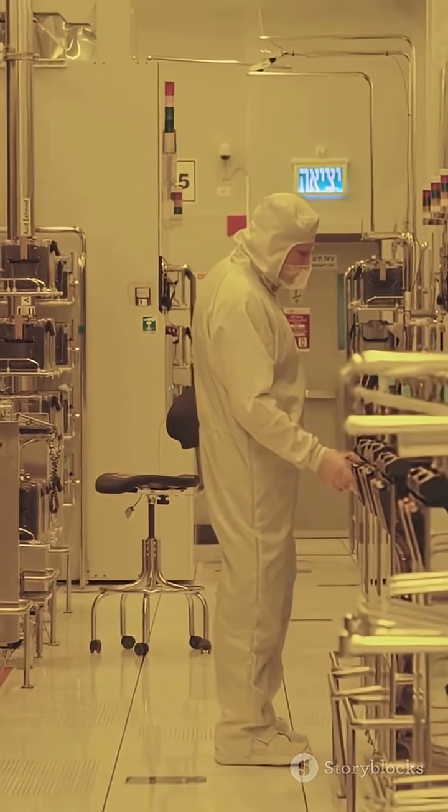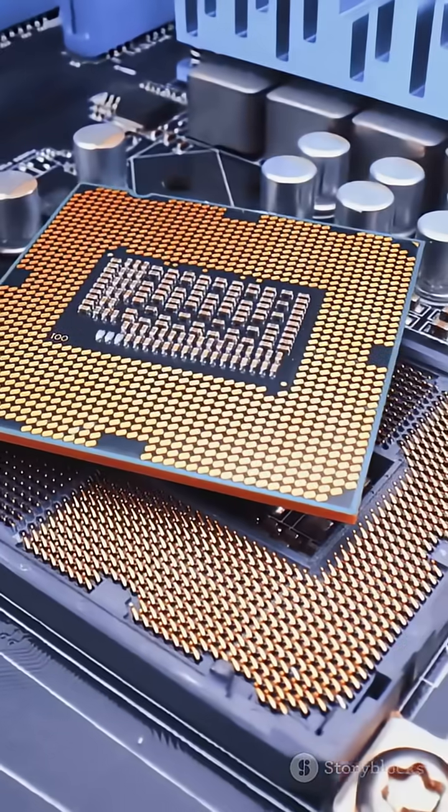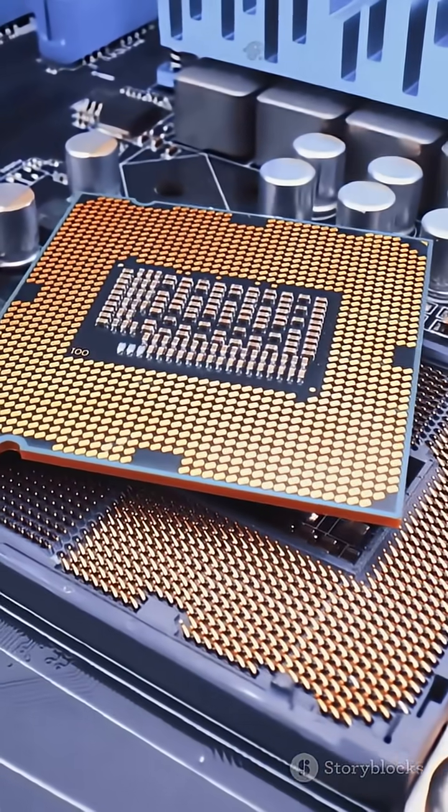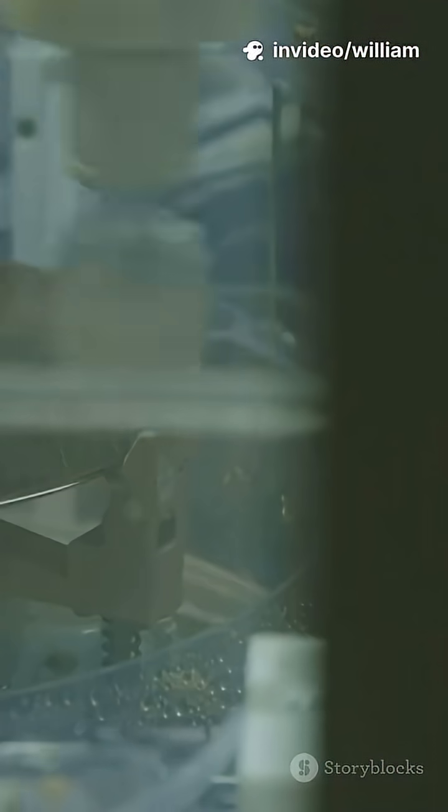Next, chemicals are added and washed away over and over, layer by layer, building up the transistors. Modern CPUs have billions of these little switches, all packed into a space smaller than your fingernail.